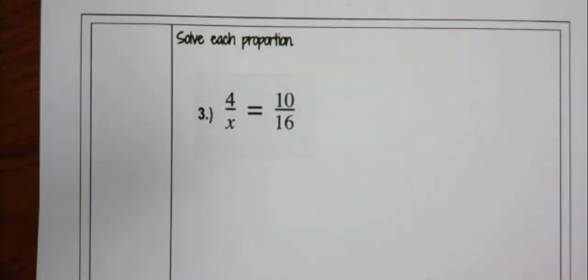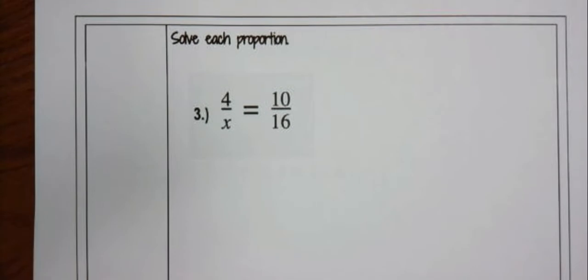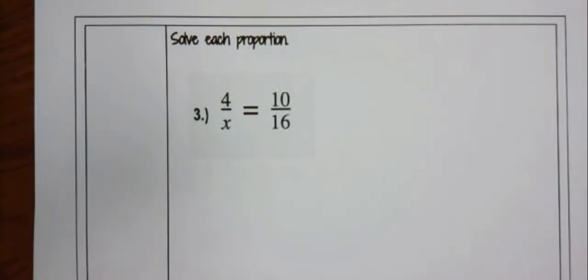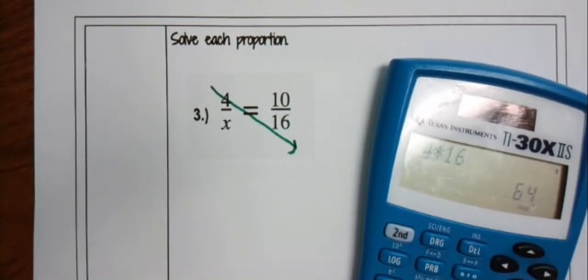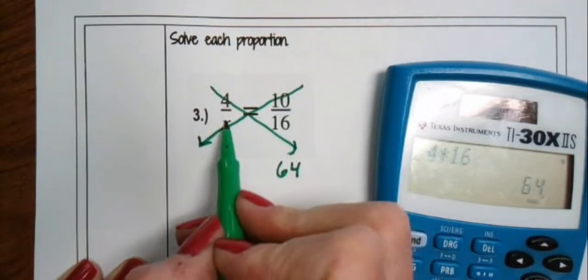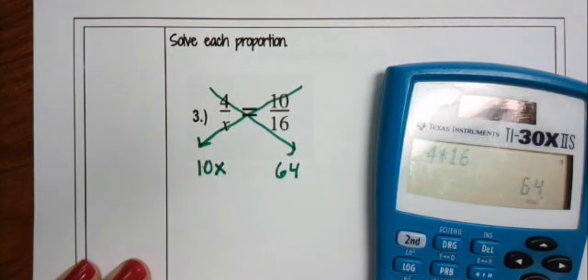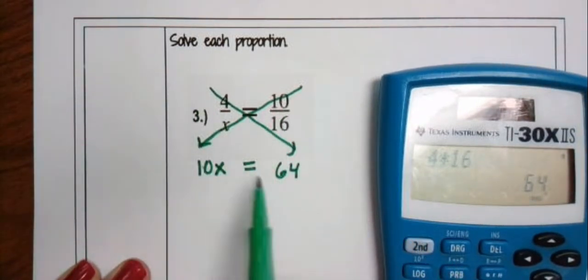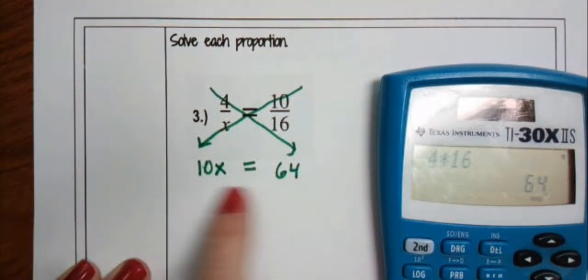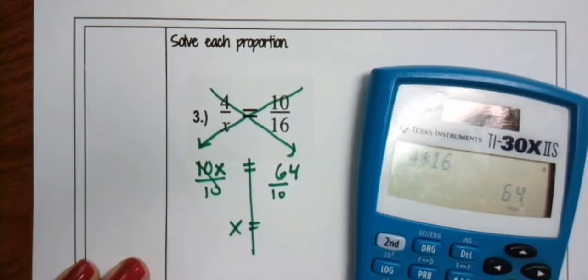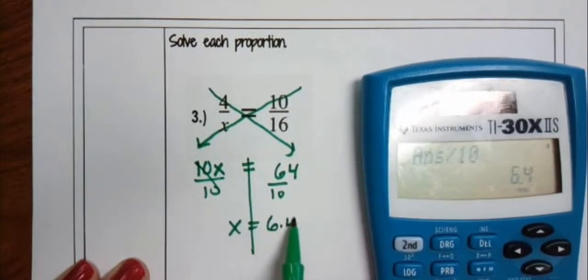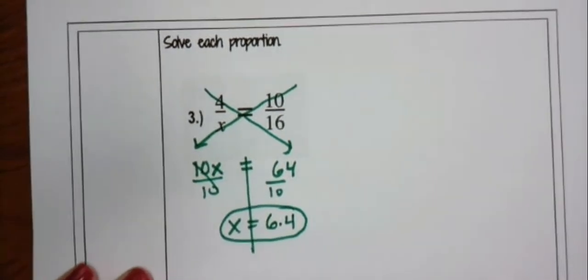Let's try example three. Do you see a relationship horizontally? Maybe not, but let's try cross products. So we're going to go 4 times 16 — using a calculator — 4 times 16 is 64. Then 10 times x is just 10x. Bring down the equal sign because the cross products should be equal: the product of 4 and 16 equals the product of 10 and x. We set them equal, giving us a one-step equation. Then x equals 64 divided by 10, which is 6.4. Our missing value is x = 6.4, using the cross products method.